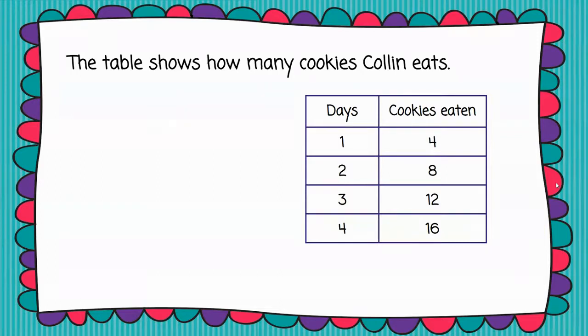So on one day, Colin ate four cookies. After two days, he had eaten eight cookies. After three days, he had eaten twelve cookies. After four days, he had eaten sixteen cookies.